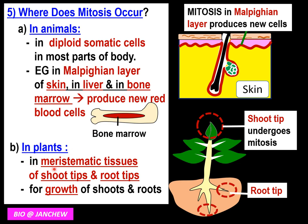In plants, mitosis occurs in the meristematic tissues of shoot tips and root tips, causing the growth of shoots and roots. These tissues are found at the top of the shoot and the tips of all roots, constantly undergoing mitosis to produce new cells so that the shoot can grow upwards toward sunlight and roots can grow further into the soil to obtain water. If the root tip is cut off, that part will not grow longer anymore because the meristem is found right at the tip.